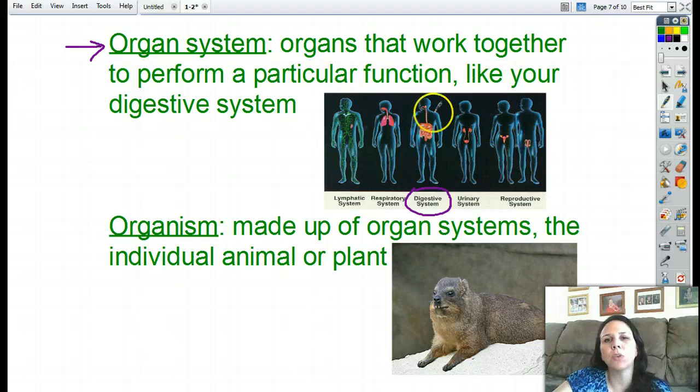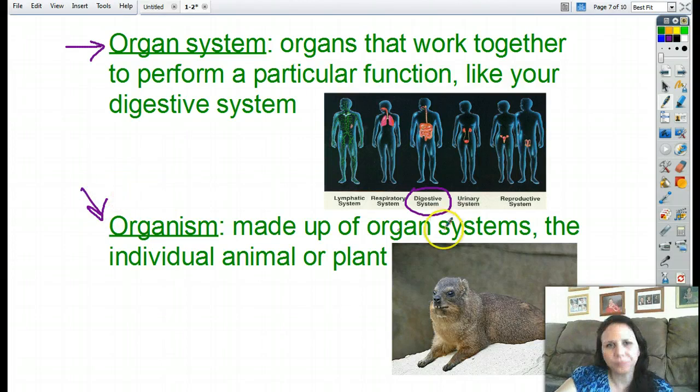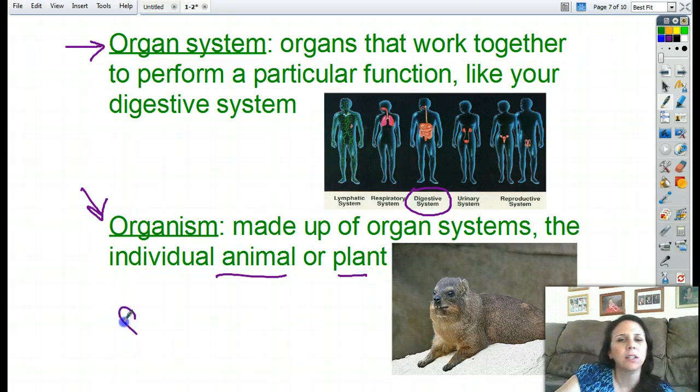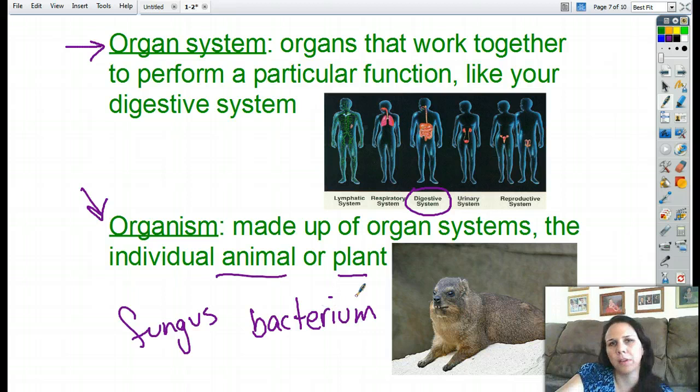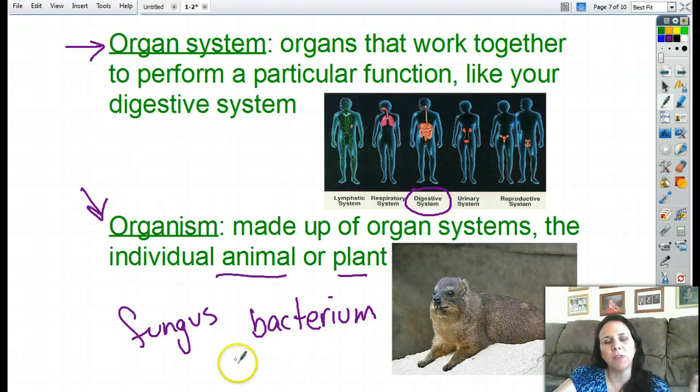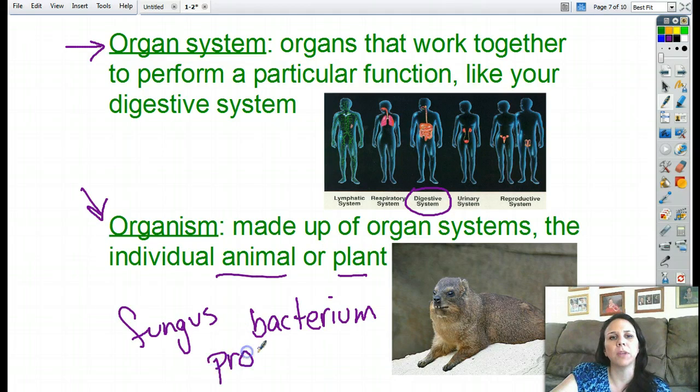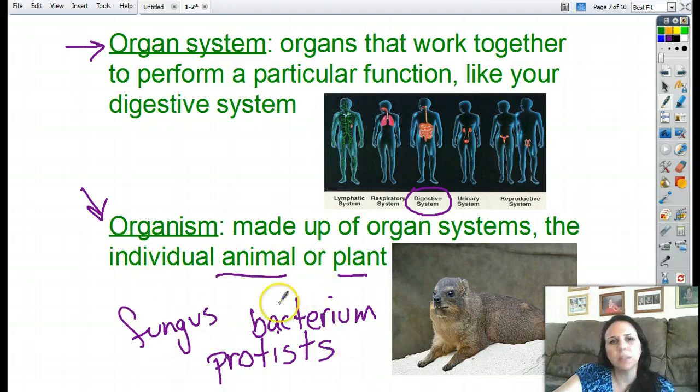Now, if I put all those organ systems packed tight into one body, then I get the organism. The organism is made up of organ systems, which include the individual animal, plant. It could also be a fungus, would be an organism. Let's see, what am I missing? A bacteria or bacterium, if we're talking about one. And there's one more kingdom of creatures. We've got plant kingdom, animal, fungus, bacteria, and, oh, there we go, protists, little single-celled creatures. So any one of these five things can be an organism.